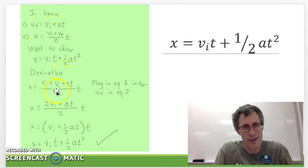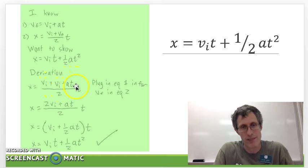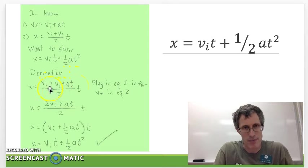So I do that and I plug it in right here and then I start simplifying. vi plus vi gives me 2 vi. Then I've got two expressions on top both divided by 2 so I just divide each one by 2. 2 vi over 2 is just vi. A t over 2 I rewrite that as 1 half a t.